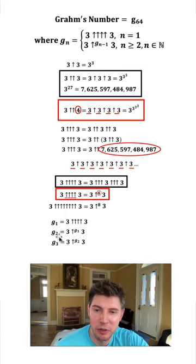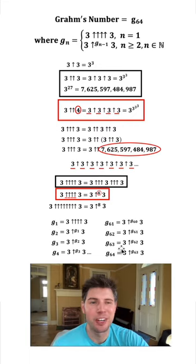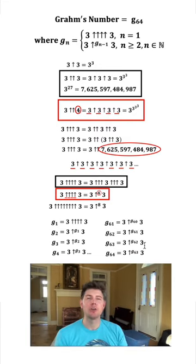And then G3 means whatever this ended up giving us, we're going to have that many arrows for this one. And that is going to keep continuing 64 times. This number is humongous.